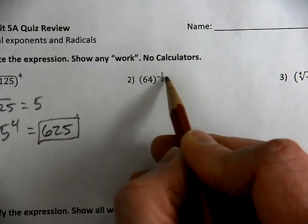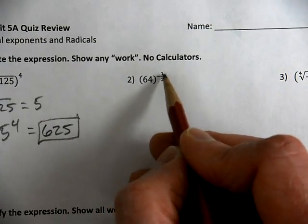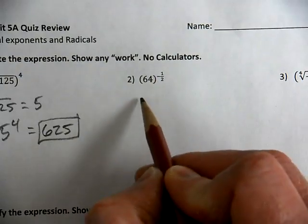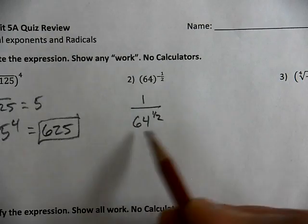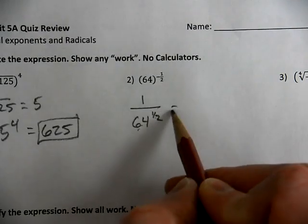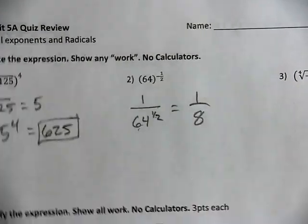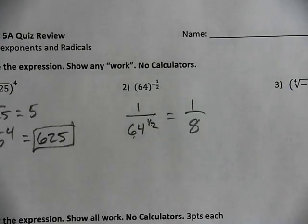This is a negative fractional exponent. A negative exponent means you're going to put the 64 to the half power into the denominator. The half power means you're taking the square root. So the square root of 64 is 8.